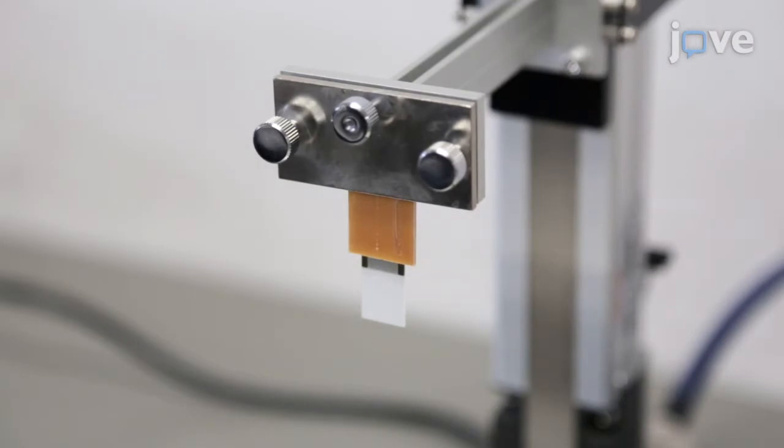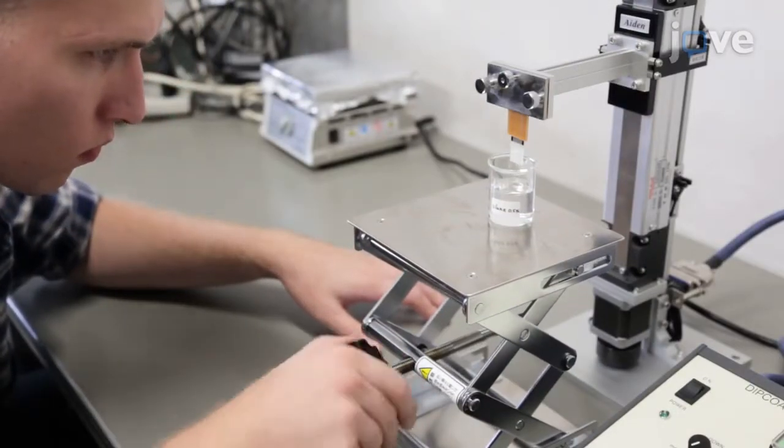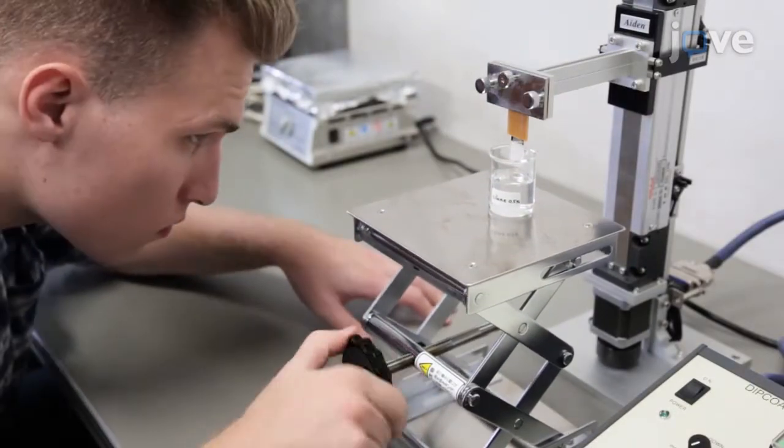Orient the device so that the atomization area will be immersed. Next, place the silane coupling solution for use with the dip coater.